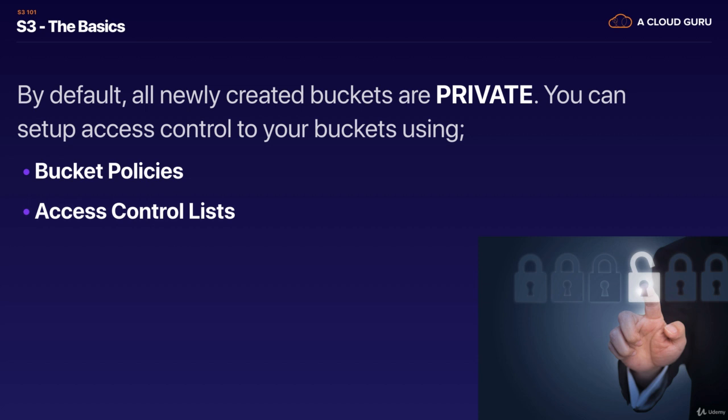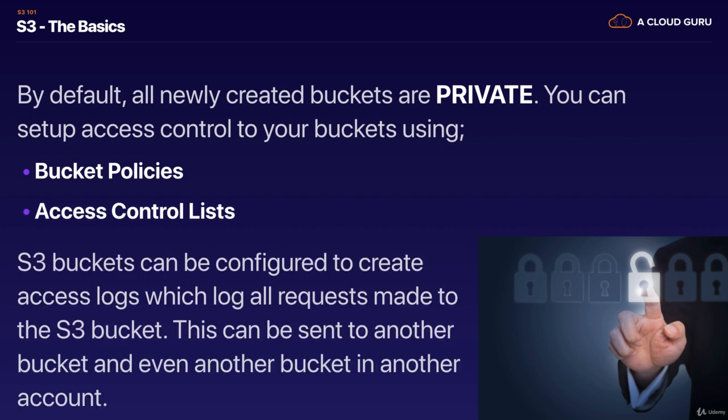Bucket policies work at a bucket level, whereas access control lists go all the way down to individual objects. S3 buckets can be configured to create access logs, which logs all the requests made to your S3 bucket. So if someone tries to access an object, that is going to be logged.